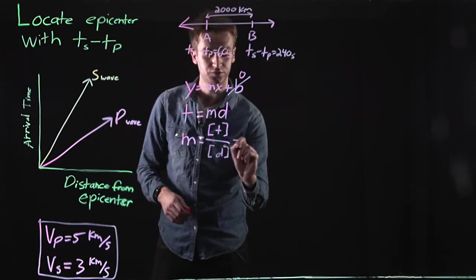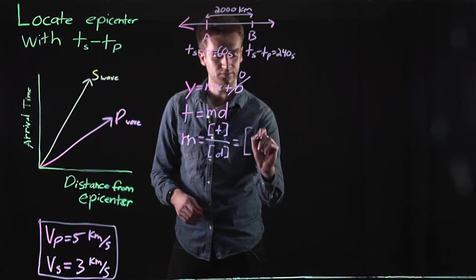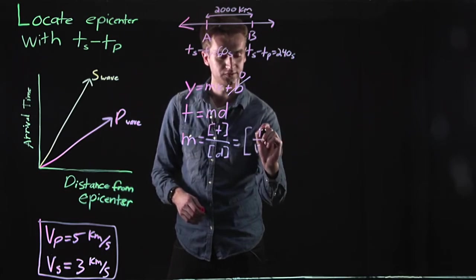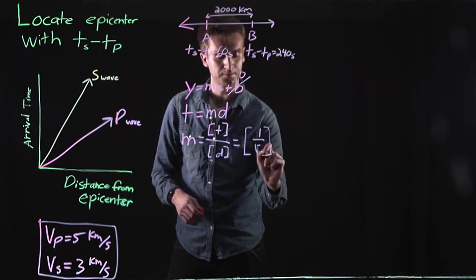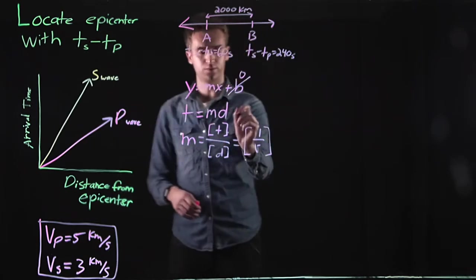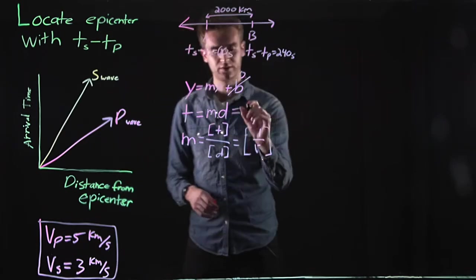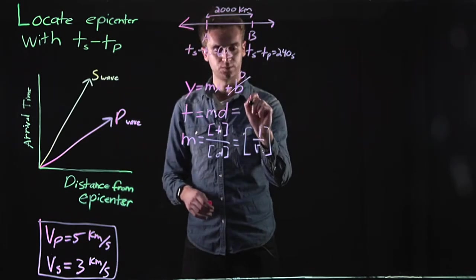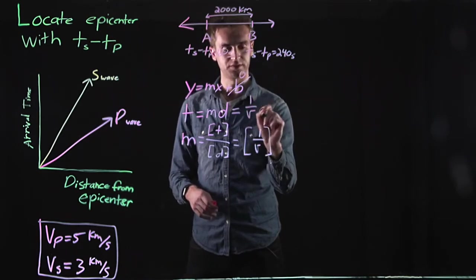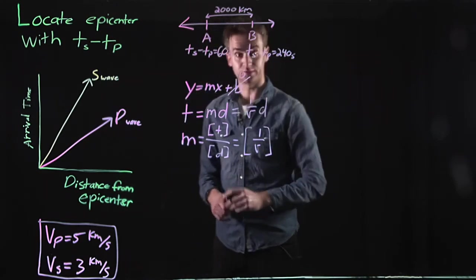So m, written in units, is time over distance, which is units of inverse velocity — because velocity is distance divided by time. So we can rewrite this equation to be one over velocity times d.